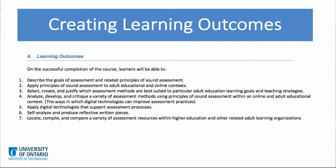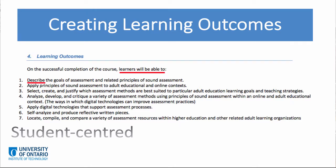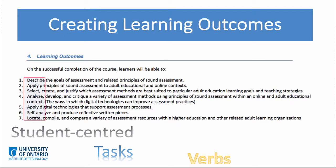Although we will not create learning outcomes in this course, it's important to know the elements learning outcomes must have. First, learning outcomes must be student-centered — we see this with starting with what learners must be able to do at the end of a course. Next, there must be specific tasks learners must be able to perform. These are verbs, and we can turn to Bloom's taxonomy to find the appropriate verbs. These verbs make the outcomes clear and concrete.